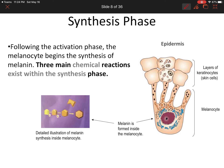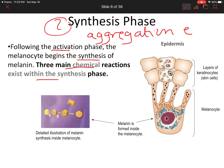The second phase is the synthesis phase. Synthesis occurs inside the melanosome, which forms through aggregation of enzymes following activation of the melanocytes by hormones such as MSH and ACTH. There are three main chemical reactions that exist within the melanosome to synthesize melanin.